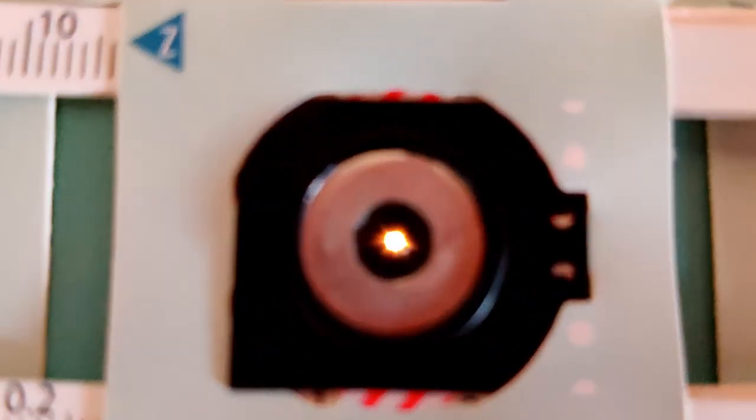Observe the arrangement of the cells and the structure of the cell walls of the onion peel.